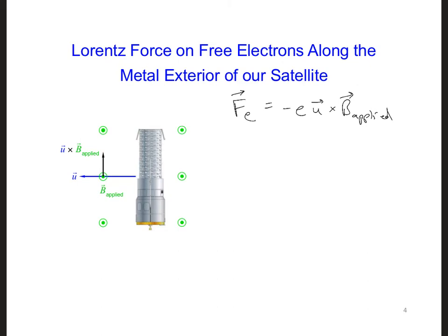And U cross B applied is an upward direction. So when we multiply that by minus e, this Lorentz force is going to move the electrons with a minus e charge towards the lower end of the satellite, giving that end a net negative charge relative to the upper end of the satellite.